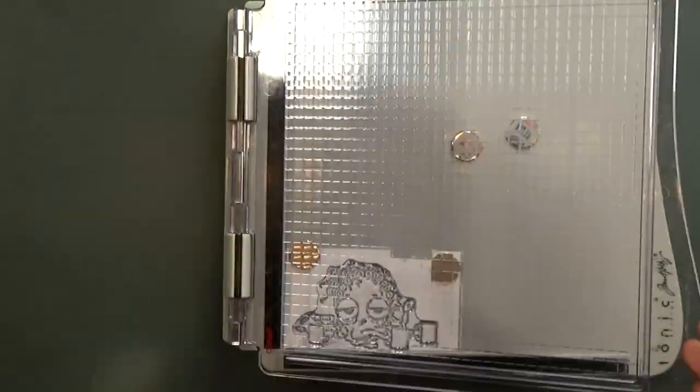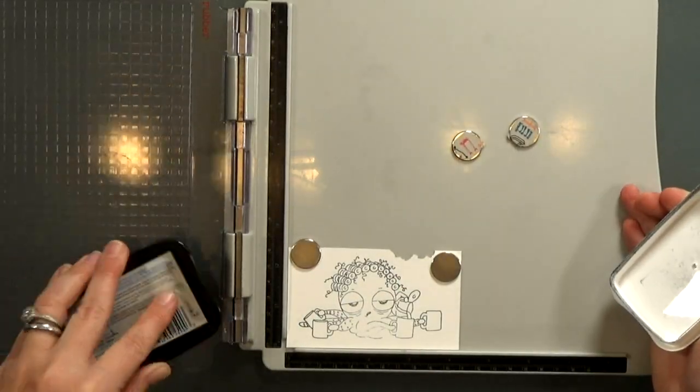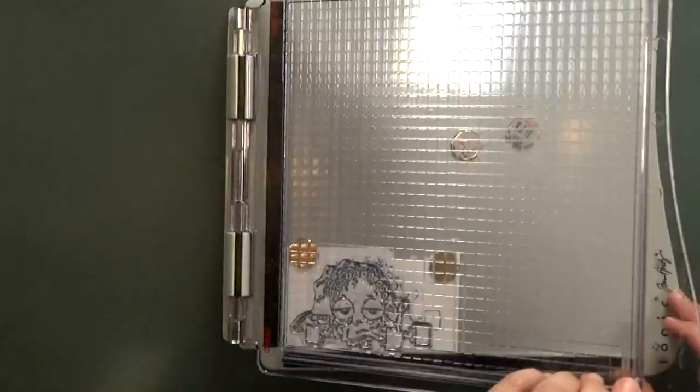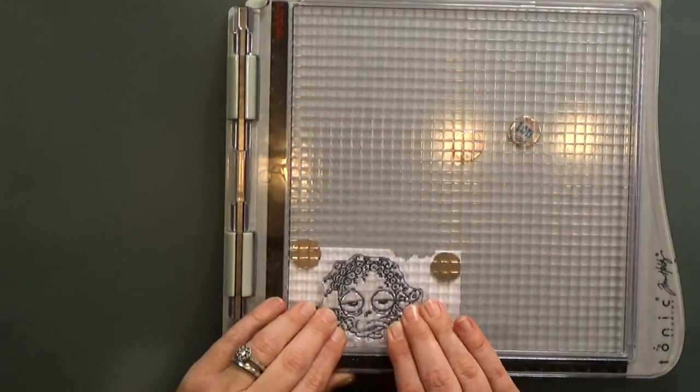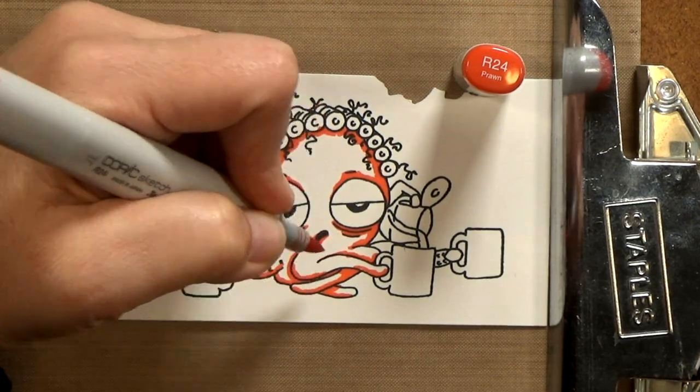I started by stamping the octopus with Memento Tuxedo Black Ink. It's a permanent ink and it won't bleed when I color with my Copic markers. It's also safe for watercoloring so I actually use it all the time. If you're not interested in watching me color, skip ahead to 1 minute and 43 seconds but I'm just giving you the highlights here.